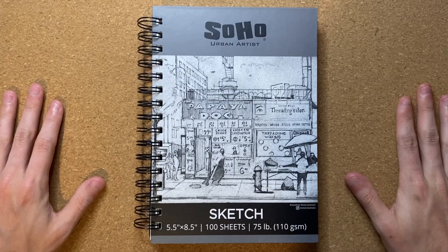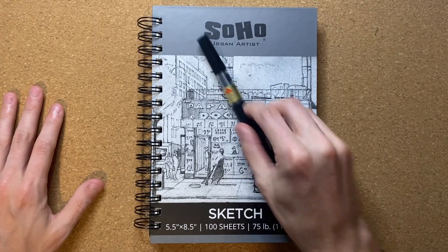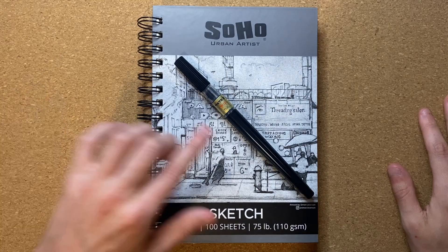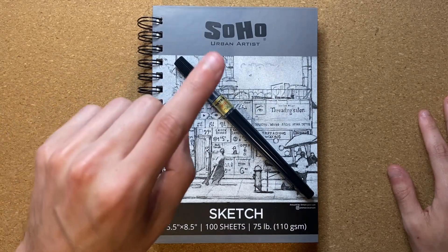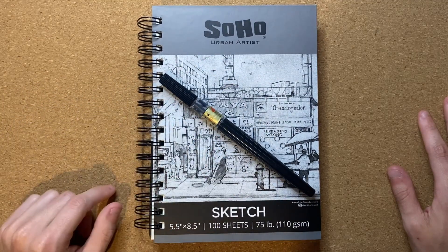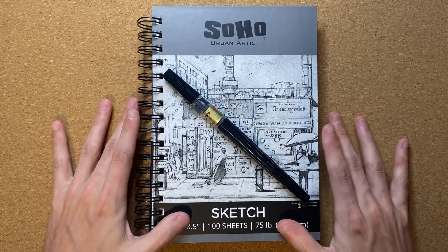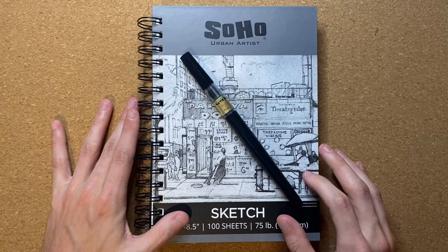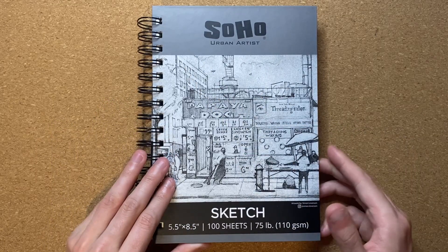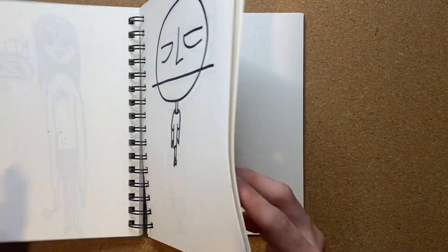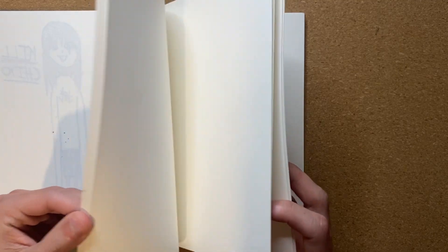Alrighty, so today I'm going to be drawing a fish with a Japanese calligraphy pen. This is something I've done a lot, and I'm going to continue doing it until this pen dies because I enjoy it. I'm going to be drawing in my Soho Urban Artist Sketchbook today, but without further ado, let's open to the nearest open page.